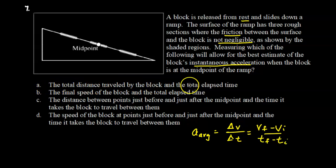Choice A. The total distance traveled by the block and the total elapsed time. So distance over time. This will not give you the acceleration. This will give you speed. Final speed of the block and the total elapsed time. So this is going to give you the average acceleration of when you start to the end, the final speed of the block. So not necessarily at the midpoint. So we want to find the acceleration and this is not going to give you that acceleration. It's not going to be at that midpoint. C, the distance between the points just before and just after the midpoint and the time it takes for the block to travel them. Once again, you're going to end up with the speed and we're not looking for speed. The speed of the blocks at the points just before and just after. So this would be VI, VF, the midpoint, and the time it takes for the blocks to travel between them. That would be the answer. That would allow us to find the average acceleration, which would give us the acceleration roughly at the midpoint of that region there.